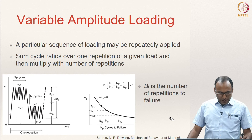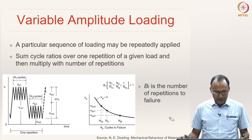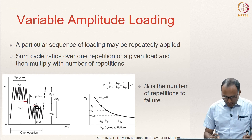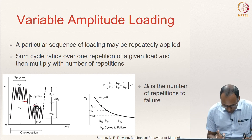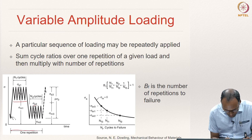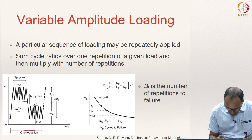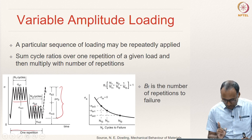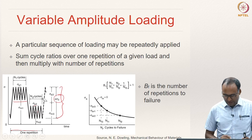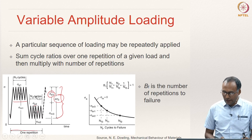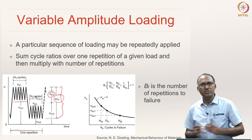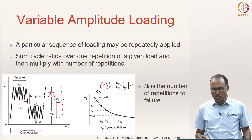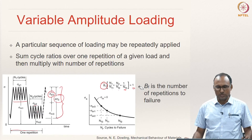However, if a particular sequence of loading is repeated again and again — for instance, applying sigma a1 for n1 cycles, sigma a2 for n2 cycles, and then repeating — one repetition is one block. So one repetition consists of n1 cycles of sigma a1, n2 cycles of sigma a2, and one cycle of sigma a3. That loading scenario repeats several times. We can write: (n1/nf1 + n2/nf2 + 1/nf3) × B = 1, where B is the number of repetitions — that represents my failure condition.